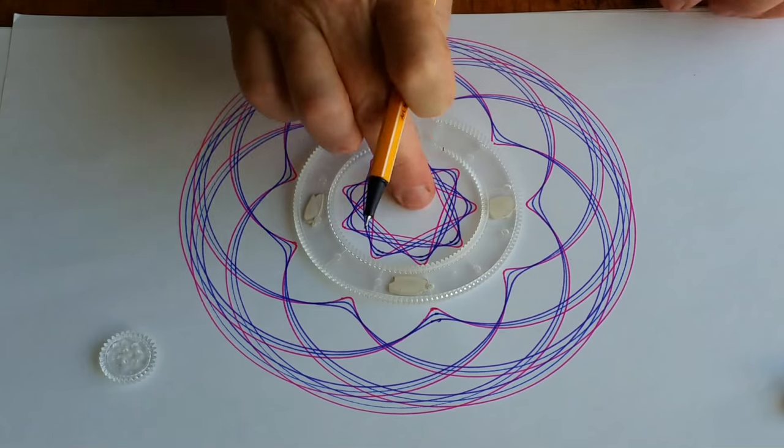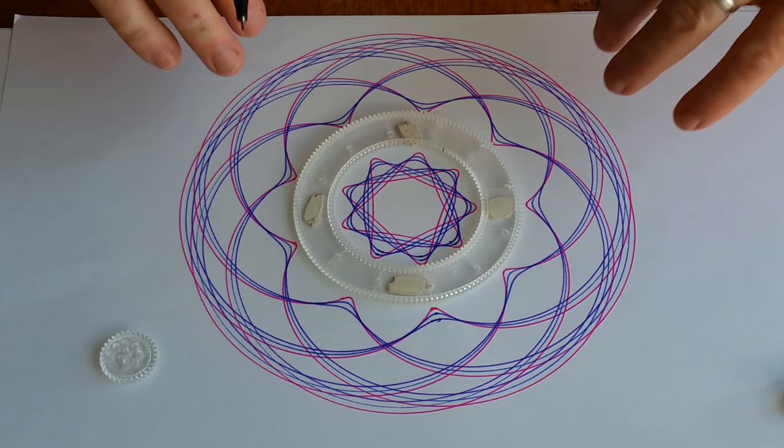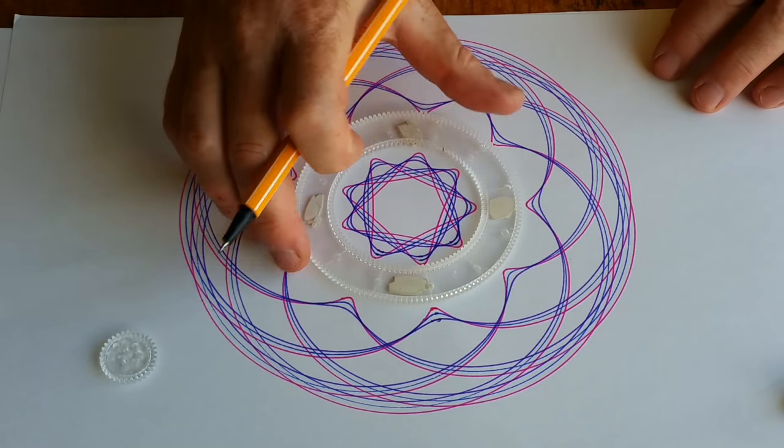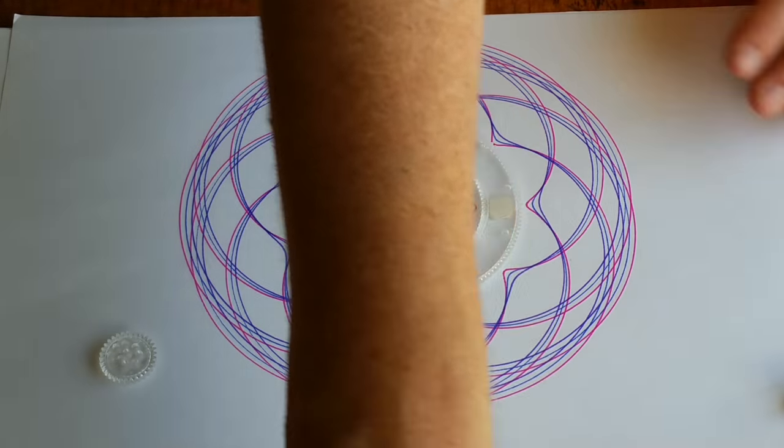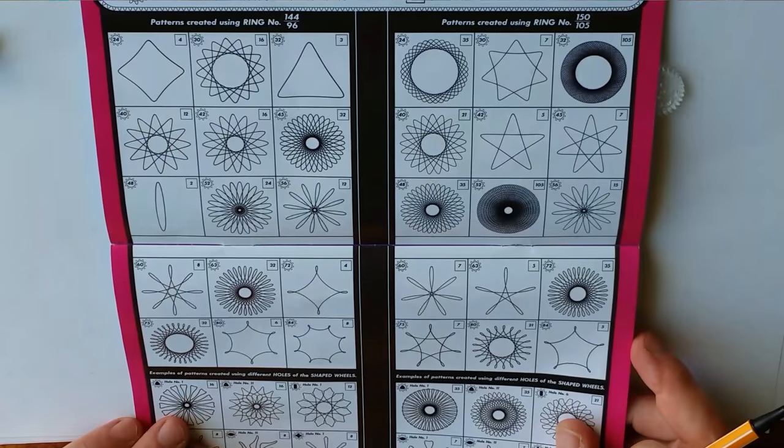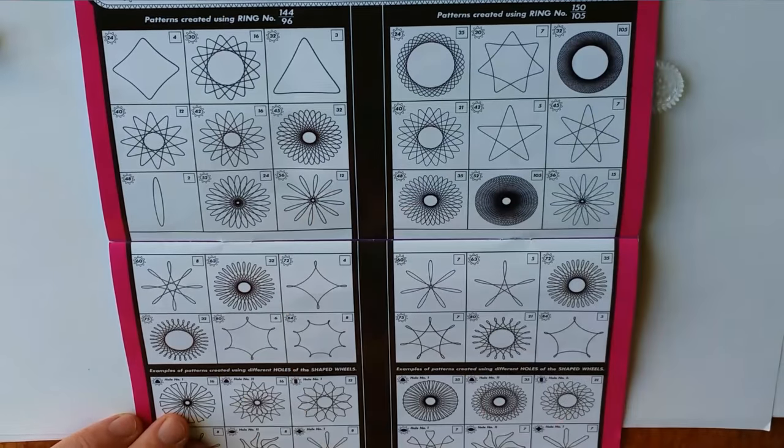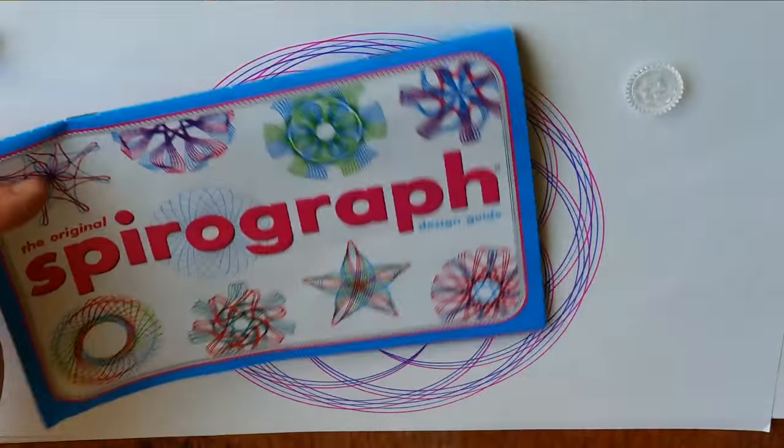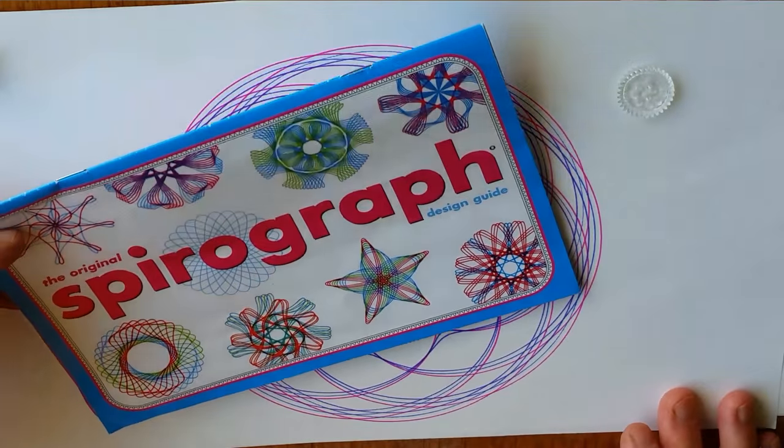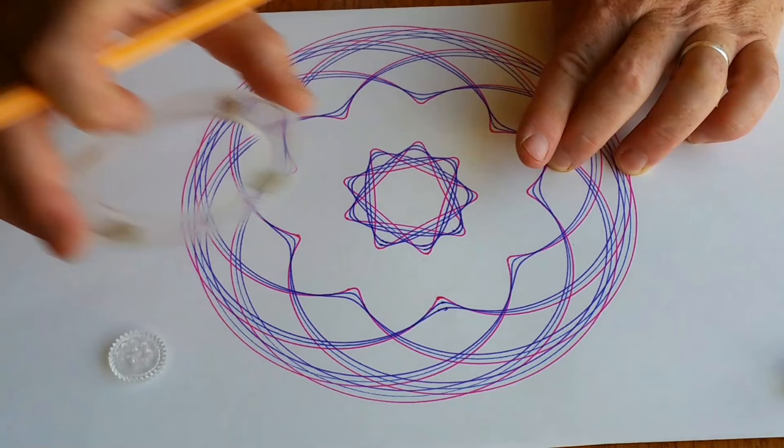So now I've made a matching pattern on the inside to go with the epitrochoid on the outside. And I used the basic pattern guide that's in the inside of the book to help me find a wheel that would work.